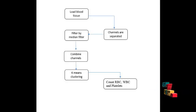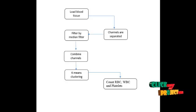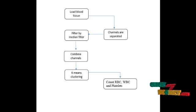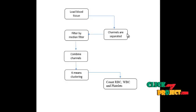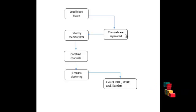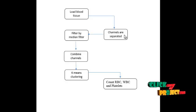For the pre-processing step, the input must be a two-dimensional gray image. For that, we separate the red, green, and blue channels. After that, we perform the filtering process — a median filter — for the red, blue, and green channel images. Median filtering removes the noisy pixels from the given images.